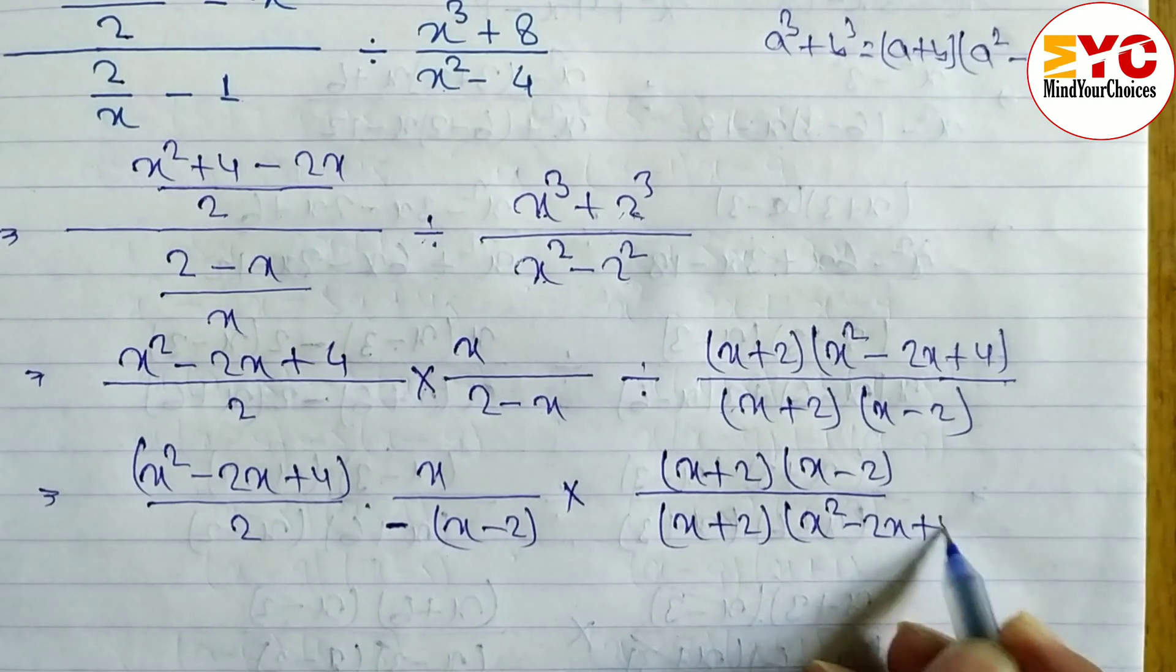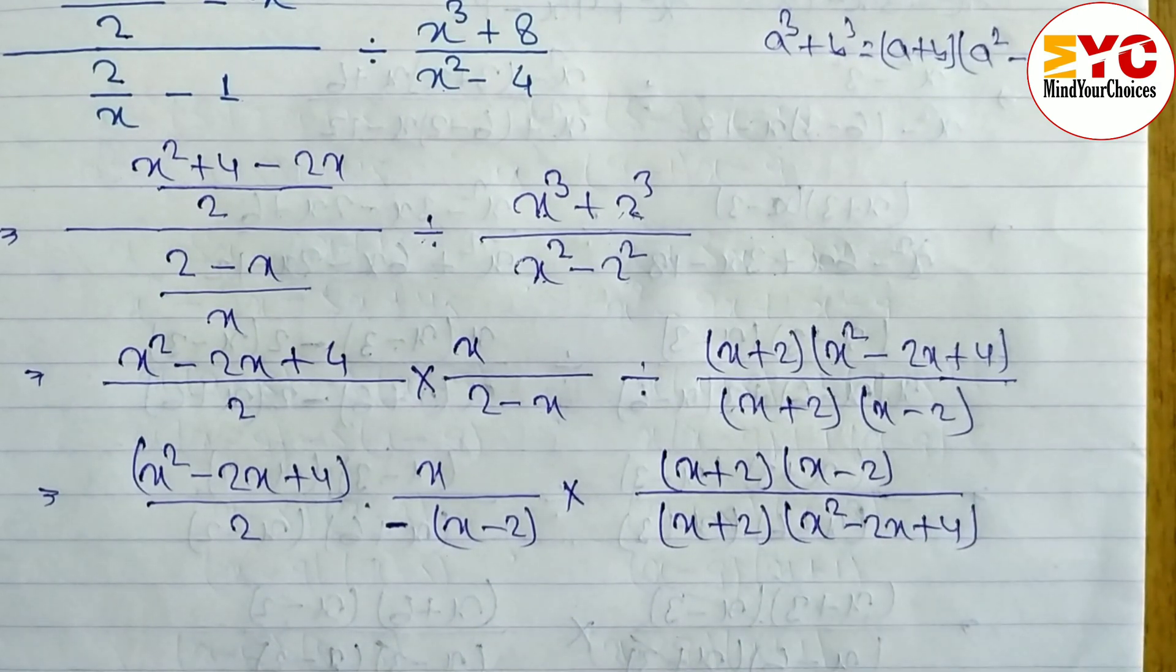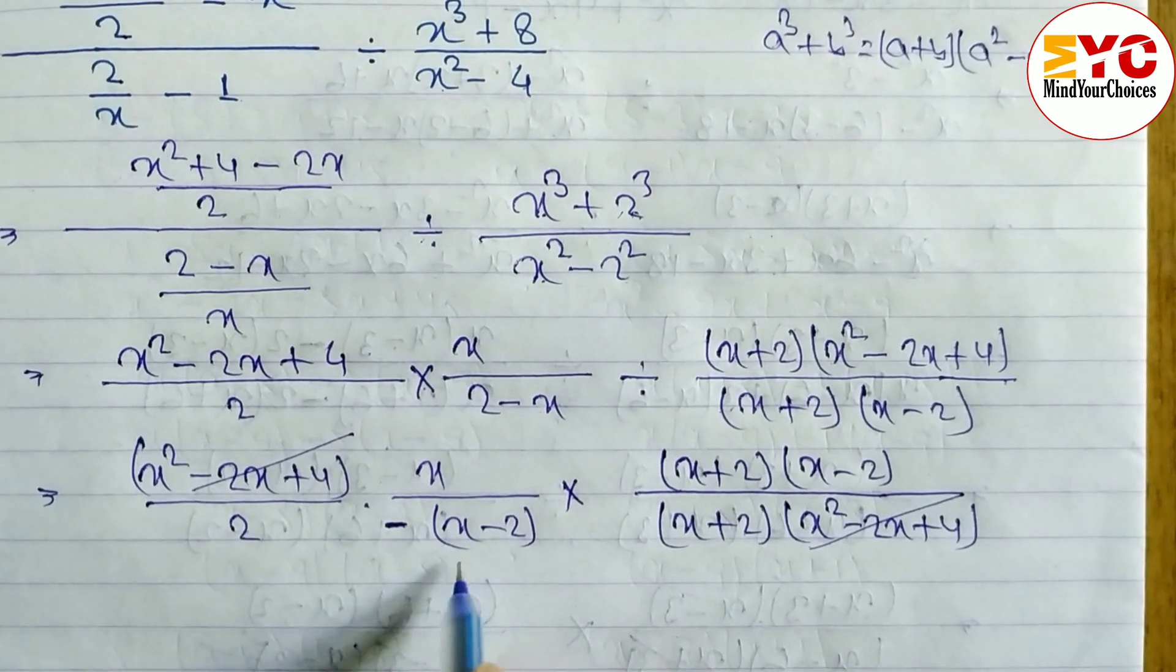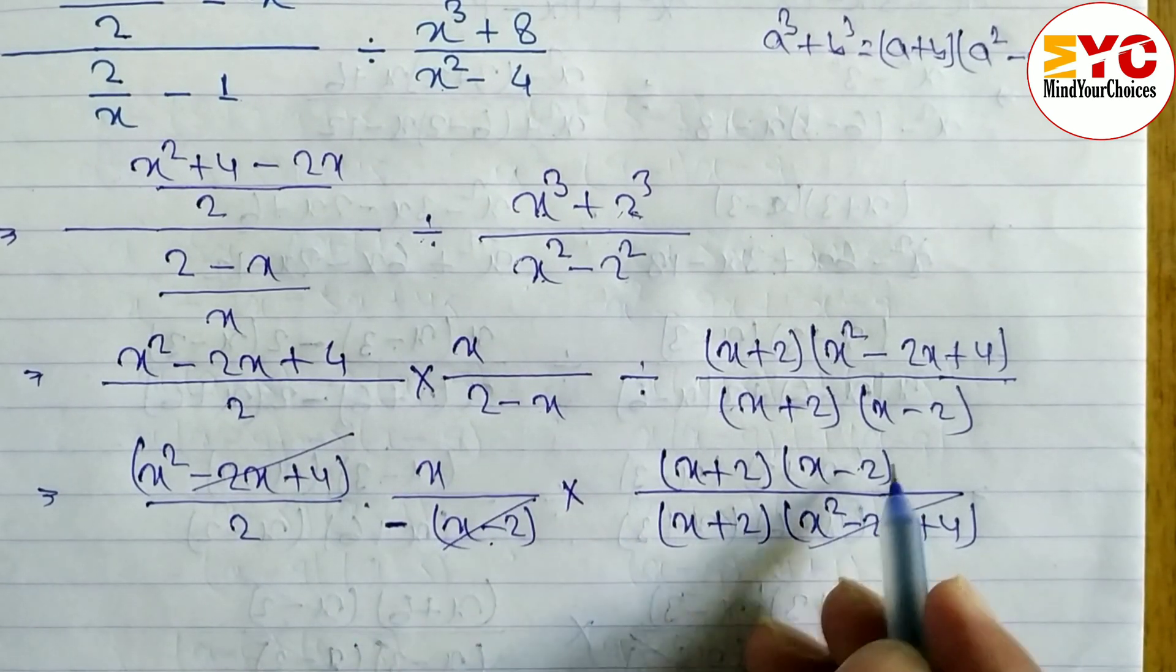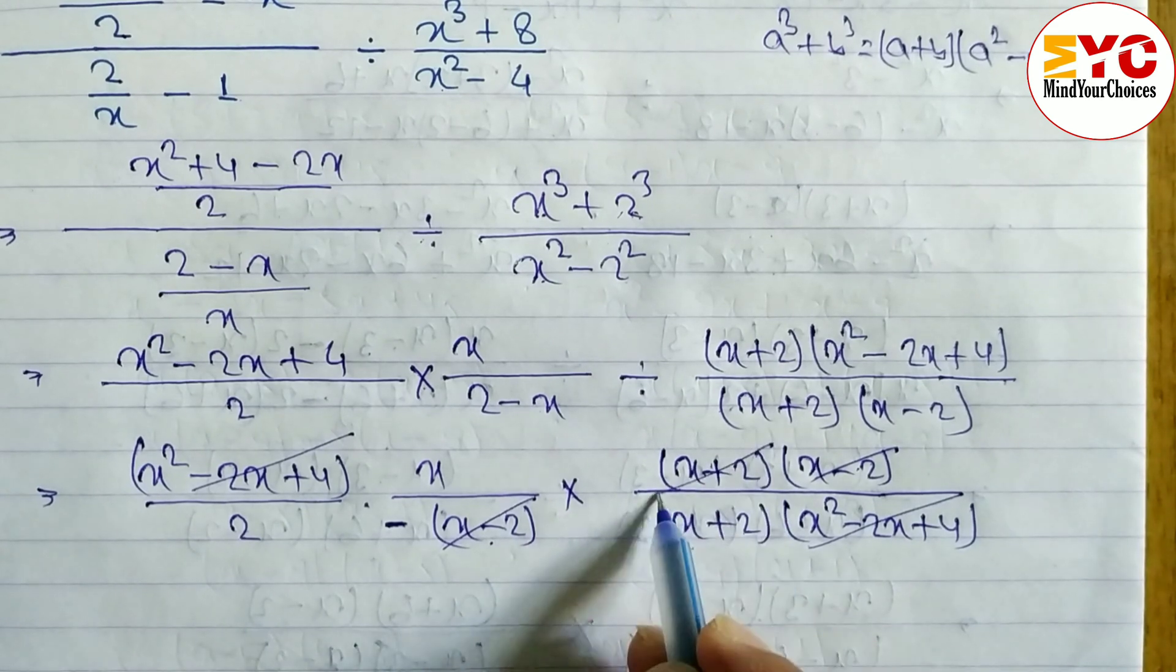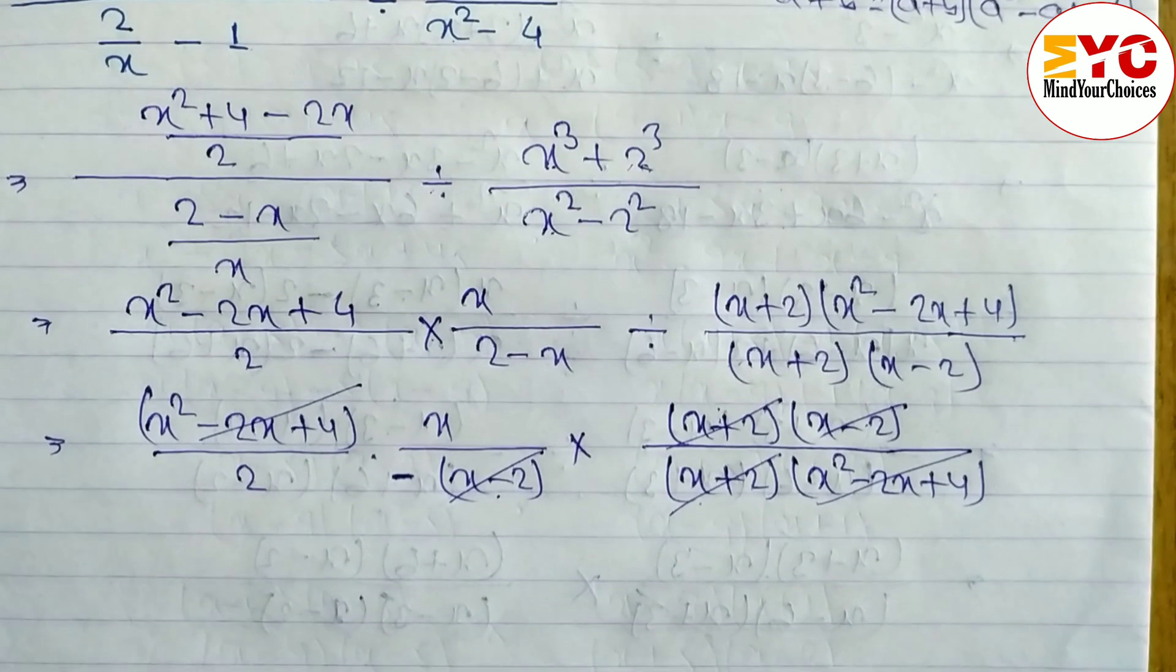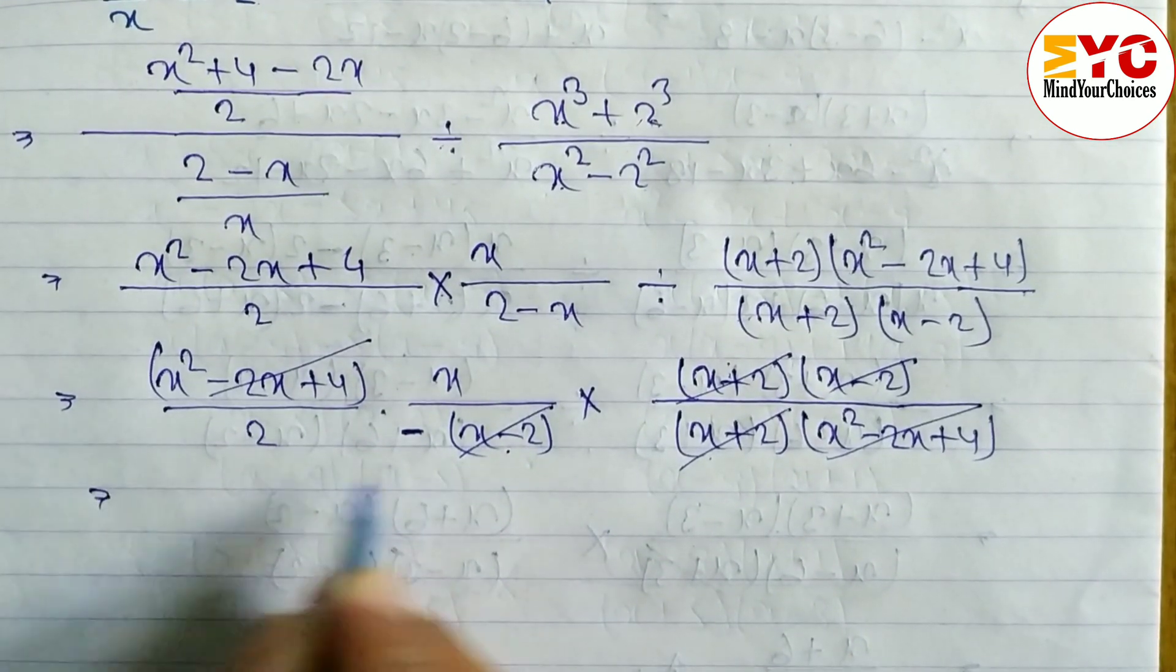We can write here, and after this we can cancel this one. Next x - 2, x - 2 also we can cancel. x + 2, x + 2 also cancel. Numerator and denominator, if same term we can cancel. So what is remaining here, here is minus...